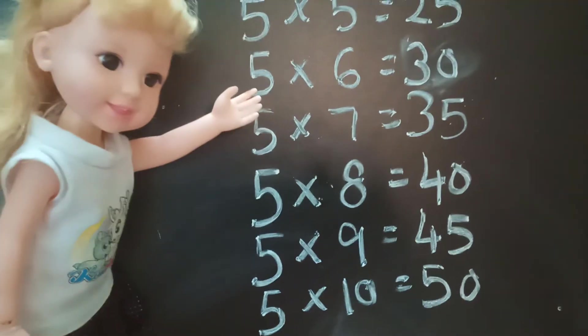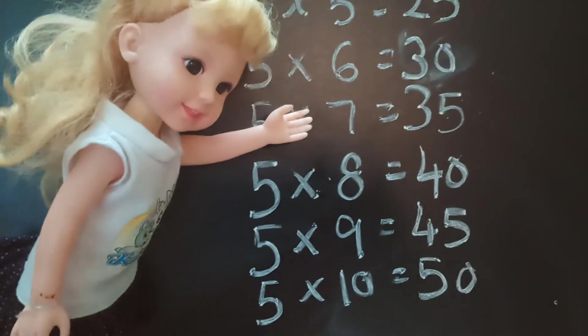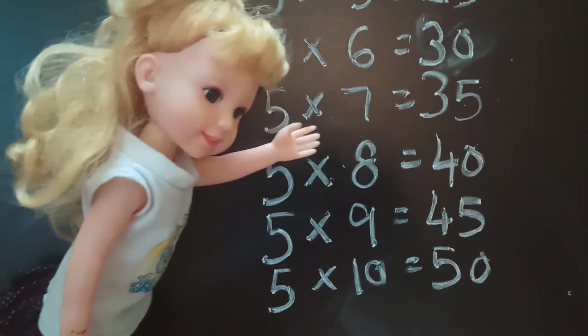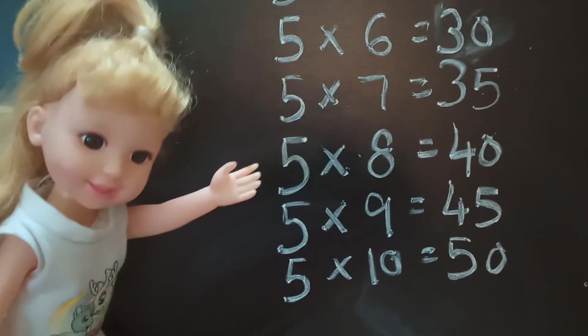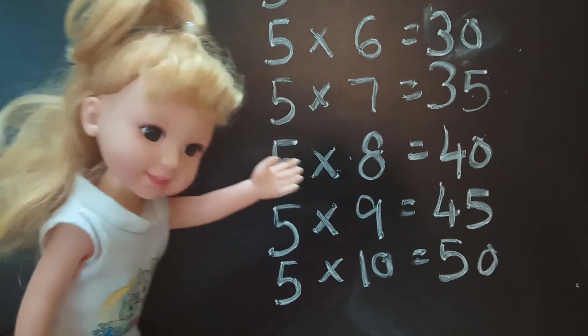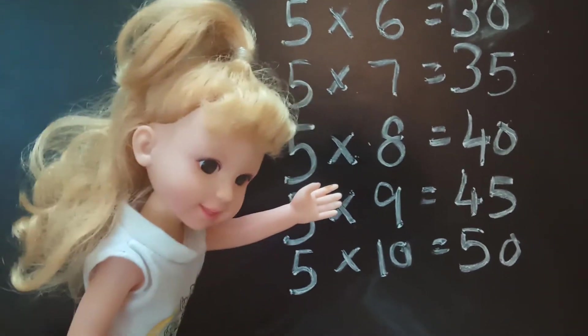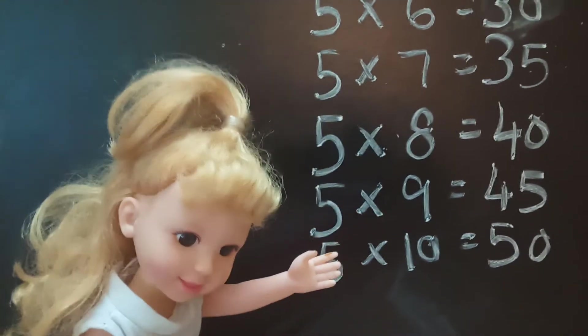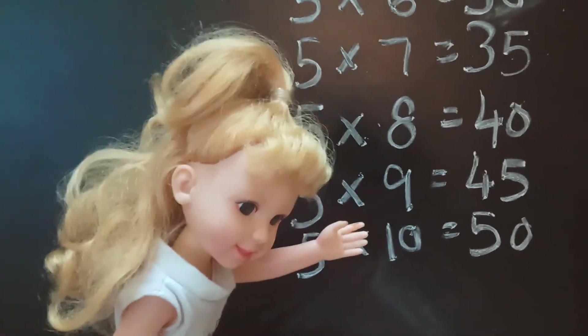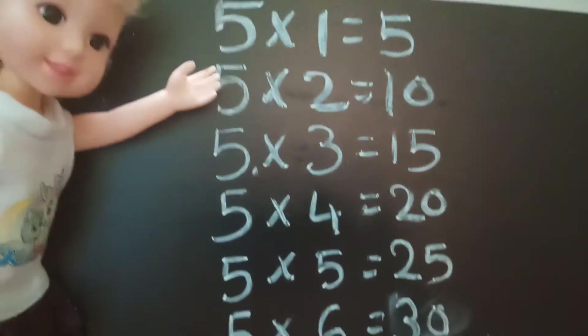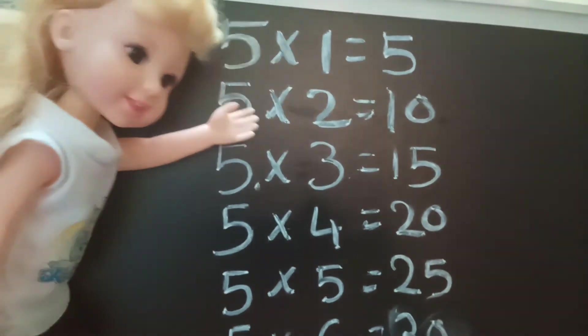5×6=30, 5×7=35, 5×8=40, 5×9=45, 5×10=50.